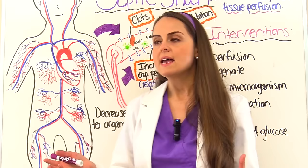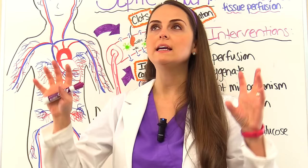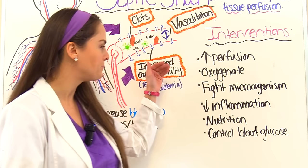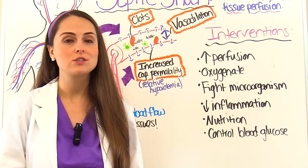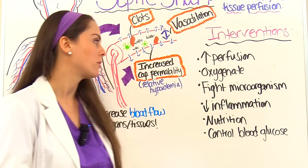With increased capillary permeability — as occurs in septic shock — fluid leaks into the alveolar sacs around the lungs, causing them to collapse and the patient to go into respiratory failure. Many of these patients need to be intubated with mechanical ventilation to breathe. We also want to fight the microorganism by obtaining cultures as soon as possible to identify what we're fighting against, so appropriate treatment and antibiotic therapy can be started.